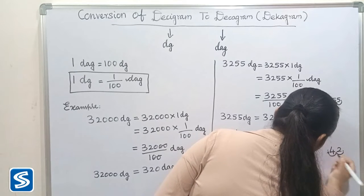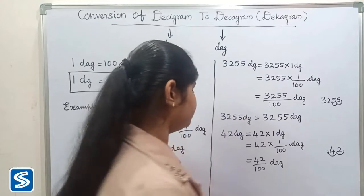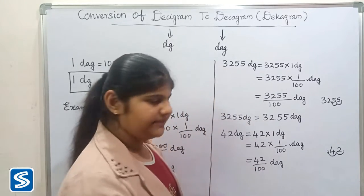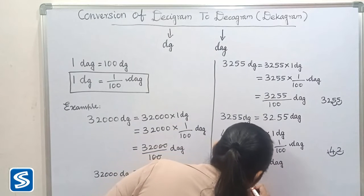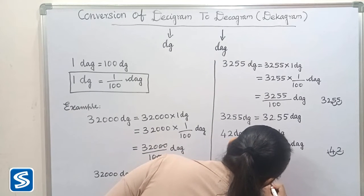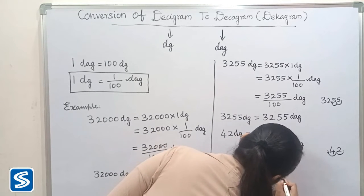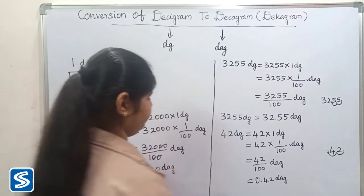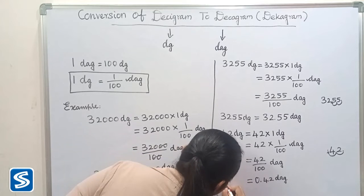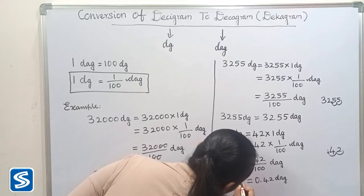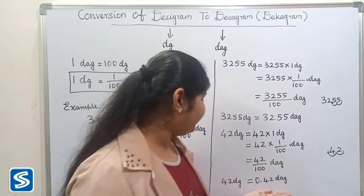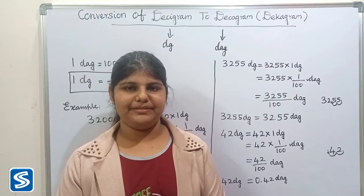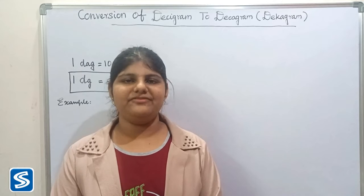Moving the decimal point 2 places to the left — 1, 2. So when we divide 42 by 100 decagrams, our answer will be 0.42 decagrams. So 42 desigrams is equal to 0.42 decagrams. Next we will take one more example.